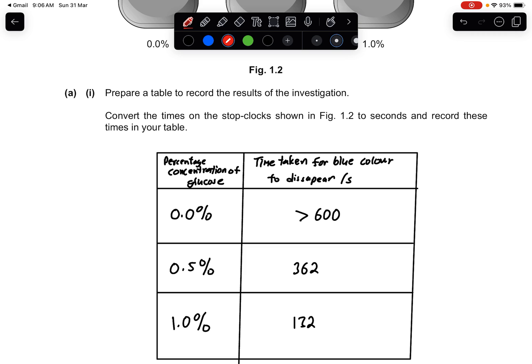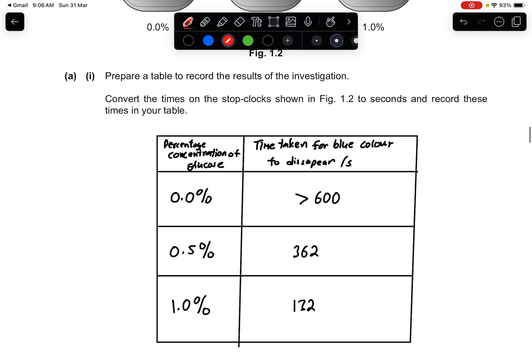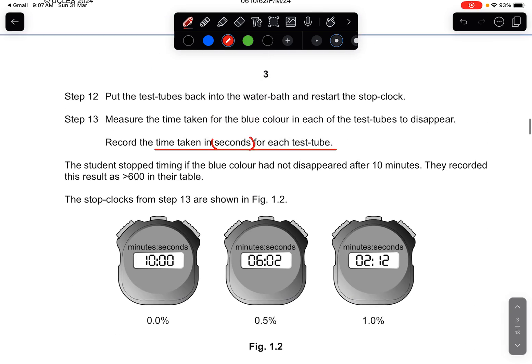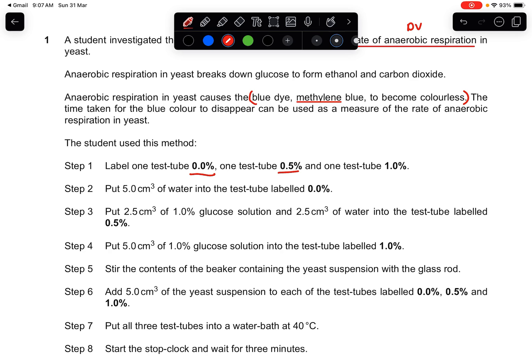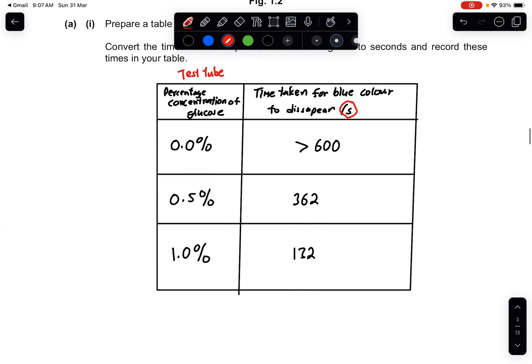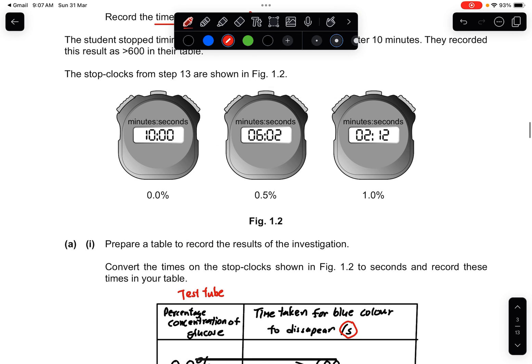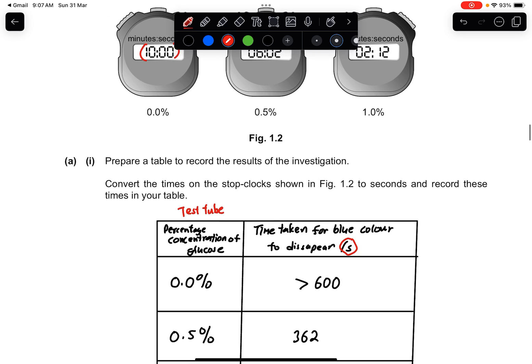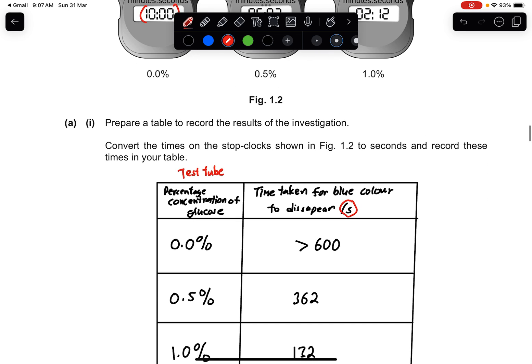They say record the time taken in seconds for each of the test tube. Record the time taken in seconds - this is the keyword. The student stopped timing if the blue colour had not disappeared after 10 minutes. They recorded this result as more than 600 in their table. Part 1, as any regular ATP question, they answer to draw and construct a table. They say convert the times on the stop clock shown in figure 1.2 to seconds and record these times in your table. So this is a general table that in order to get the marks you state the percentage concentration of glucose or you may also put as test tube.